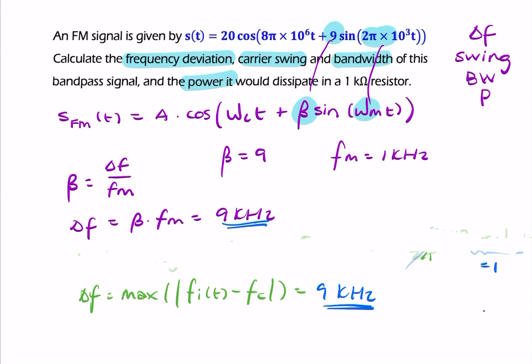So moving on, the next thing we're asked to find - we found delta f - the next thing was the frequency swing. Now, the frequency swing, or the carrier swing, is simply twice the frequency deviation.